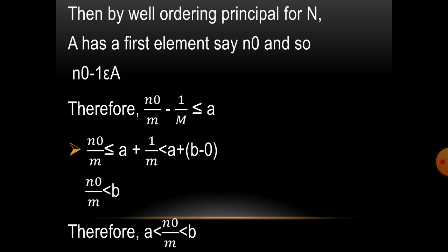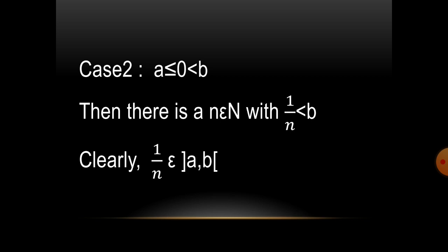And so N0 - 1 belongs to A. Therefore, N0/M - 1/M ≤ A. It implies that N0/M ≤ A + 1/M < A + B - A. Then N0/M < B. Therefore, A < N0/M < B. We move to Case 2.